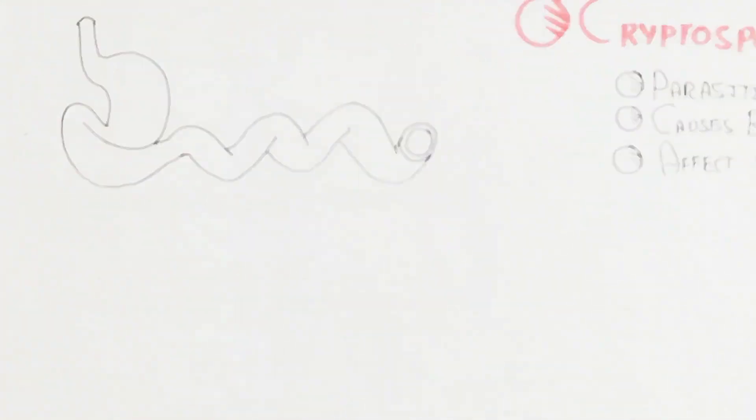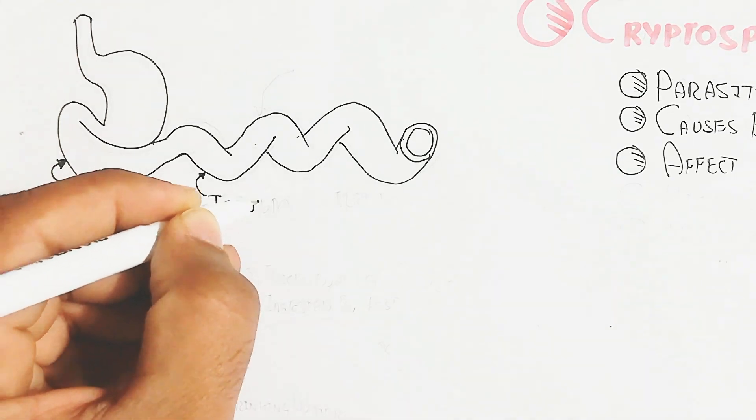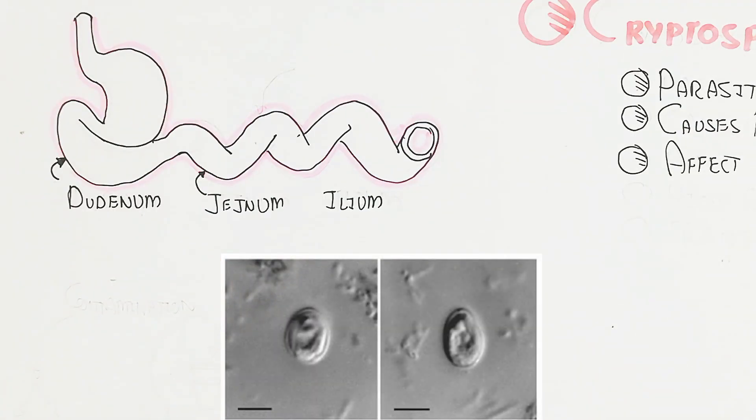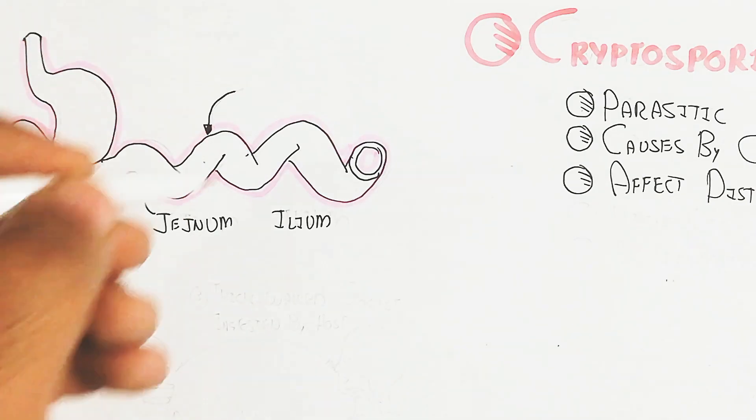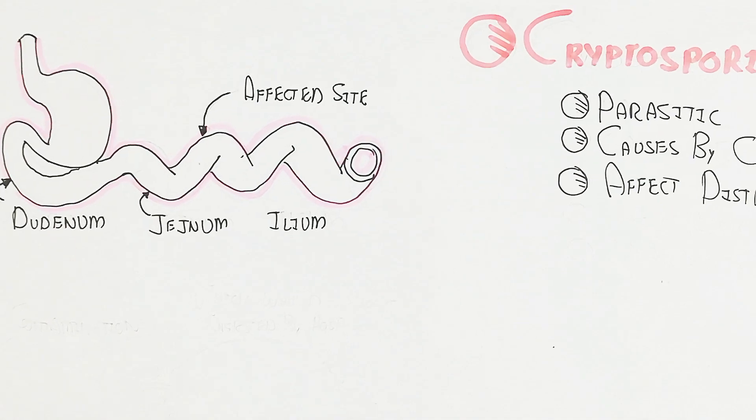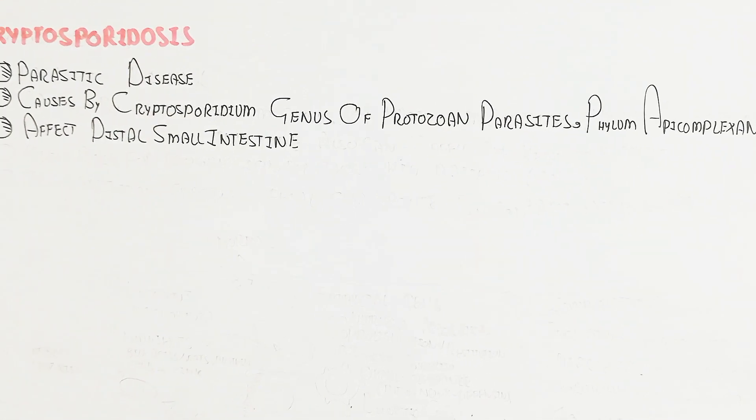It affects the distal small intestine - here is the stomach, duodenum, jejunum and ileum. This is basically the distal part, the affected side. This basically causes an invasion into the epithelial cell as well as remaining in the lumen.